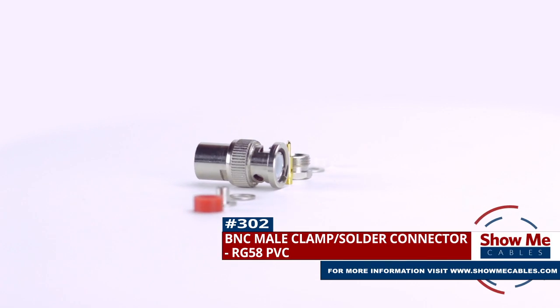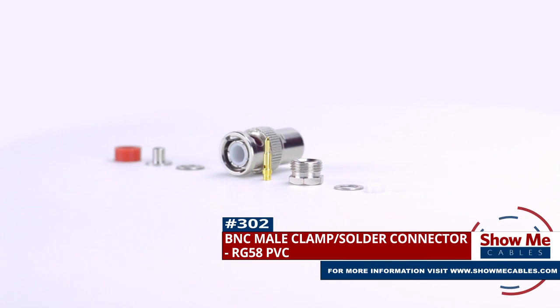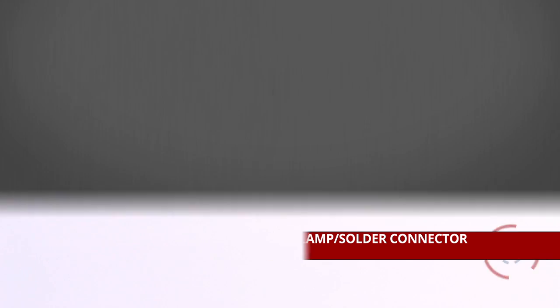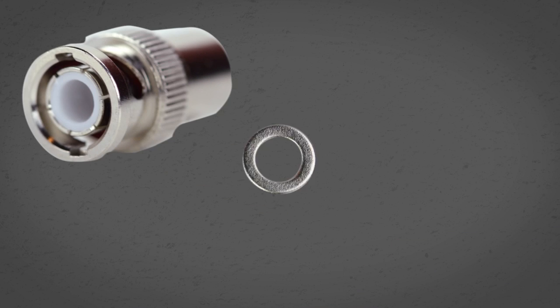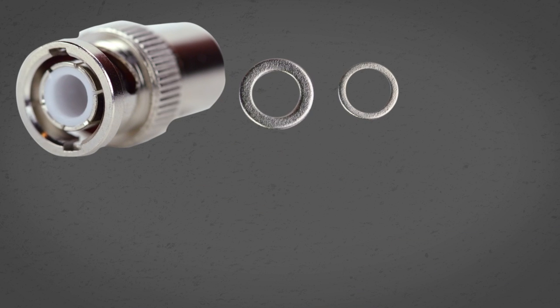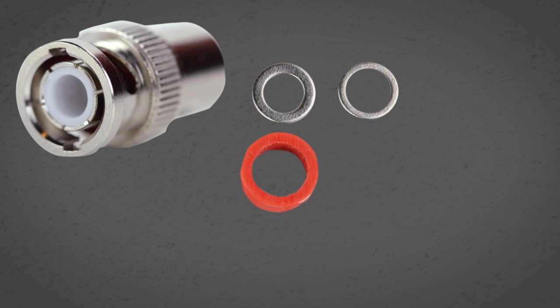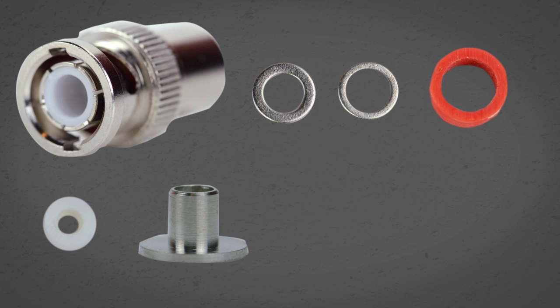This is the BNC male clamp connector for RG58 PVC. The connector consists of the connector housing, two washers, one regular and one thin, a grommet, a plastic spacer, a metal spacer, a locking bolt, and a pin.